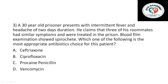Question three: a 30-year-old prisoner presents with intermittent fever and headache of two days duration. He claims that three of his roommates had similar symptoms and were treated in the prison. Blood film examination showed spirochetes. Which of the following is the most appropriate antibiotic choice? A: ceftriaxone, B: ciprofloxacin, C: procaine penicillin, D: vancomycin. I am sure this is not difficult because we just reviewed the spirochete group of bacteria.